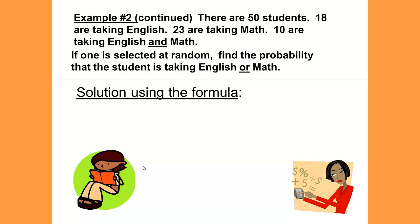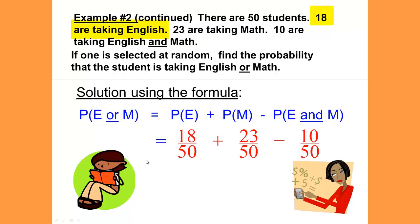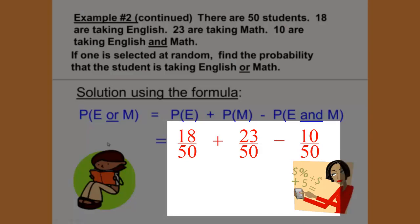We can also find the same solution using the formula. The probability of E or M is the probability of E plus the probability of M minus the probability of E and M. We do not want to count the AND twice. The probability of E is 18 out of 50. Plus the probability of M, which is the 23 students out of 50. But remember, we counted those 10 students taking English and math twice. Once for the English, once for the math. So we'll subtract those 10 students back out once so that we have the correct number of students. So that would be 18 over 50 plus 23 over 50 subtracting 10 over 50, and that will give us the .62 as well.